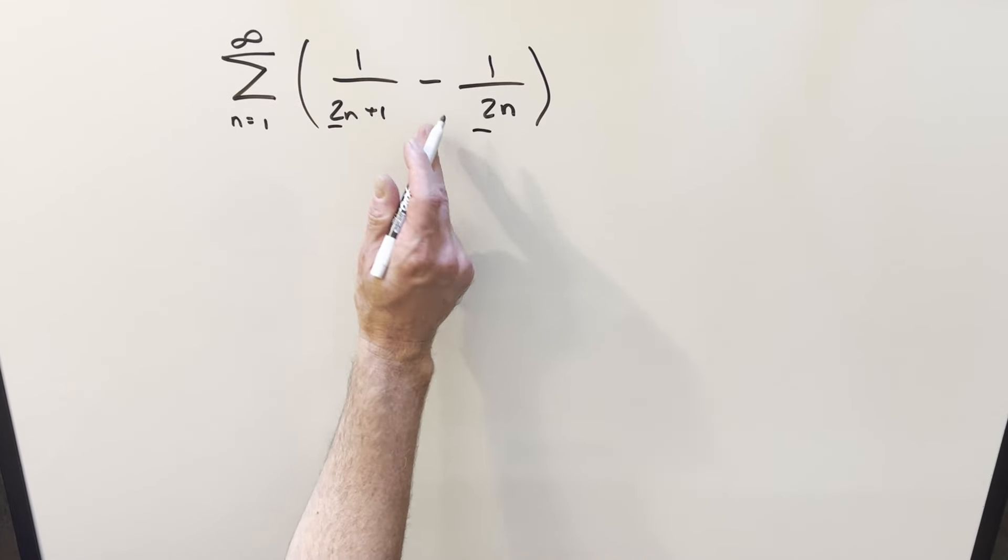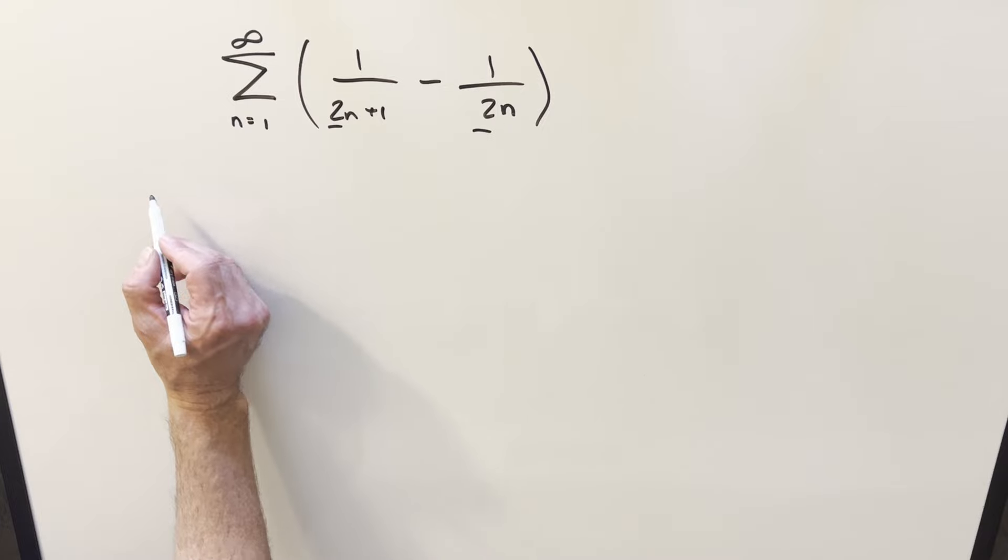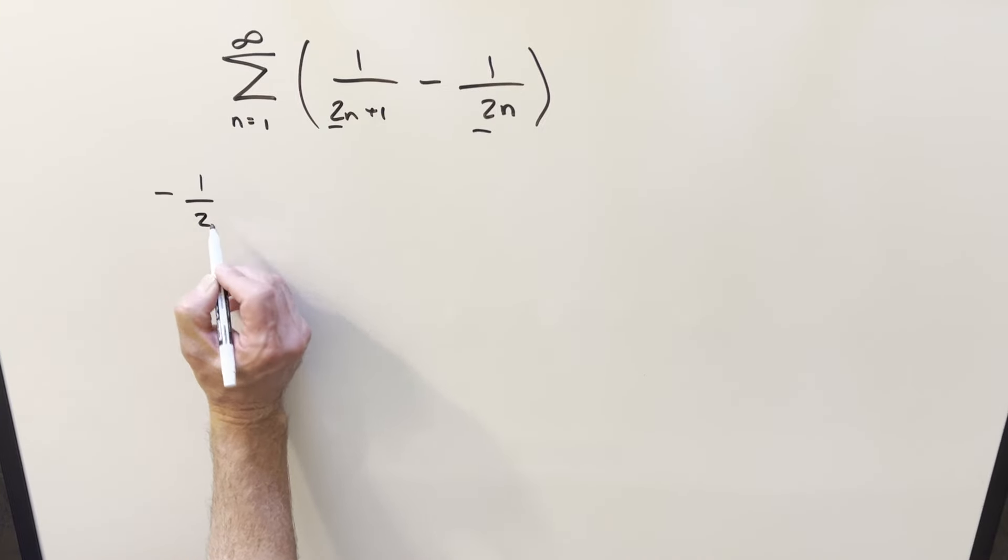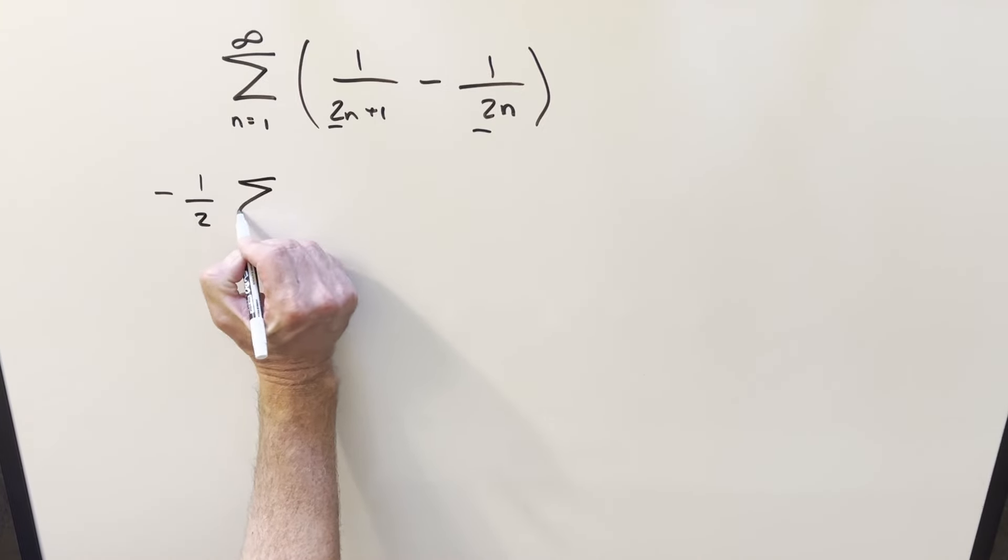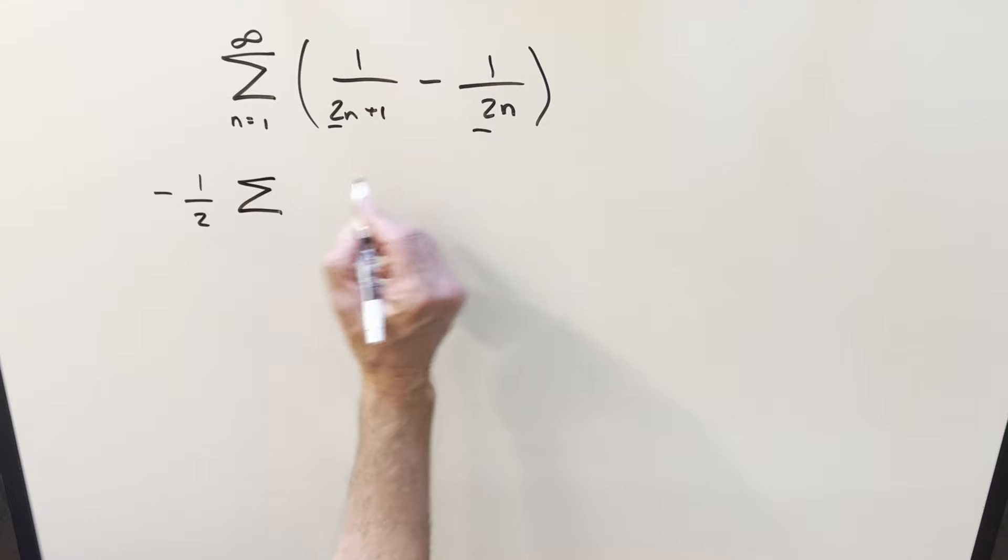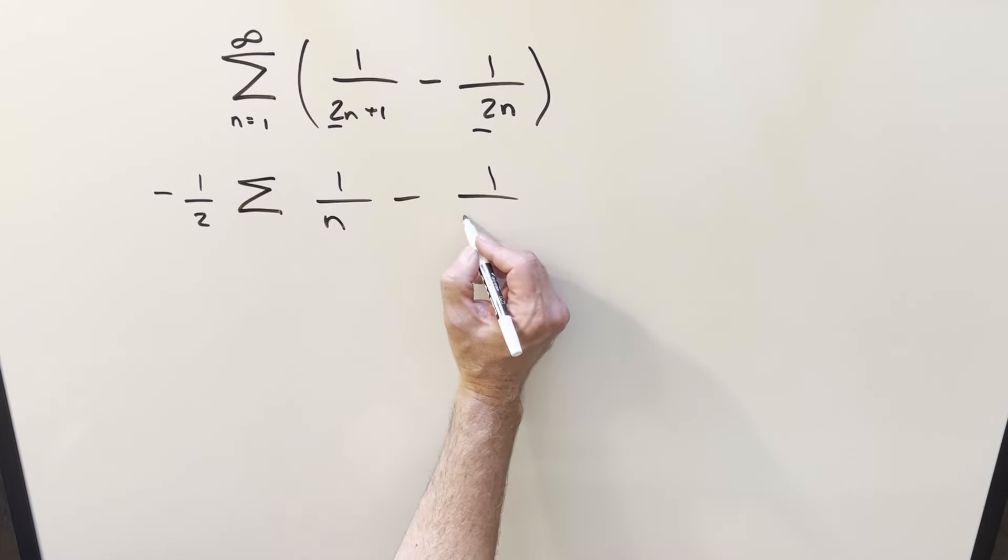First, I want to factor out the two, but also I want to flip the order of this so I can factor out minus 1 half in order to rearrange it. So then doing that, we'll switch the order of the terms. The first one is just going to become 1 over n. And the second one then becomes 1 over n plus 1 half.